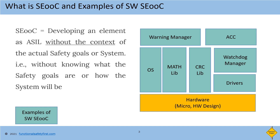Another example of software SEooCs is the operating system. All the ASIL-certified operating systems available in the market today are developed as SEooCs, such as QNX OS, Integrity, SafeRTOS, etc. Other examples include middleware components or libraries such as a math CRC library, Autosar watchdog manager, or even application software components for a specific functionality, such as a warning manager that manages all the warnings of the system, or an adaptive cruise control function in an ADAS system. The key takeaway is that any software component, no matter where it is placed in the software architecture — be it a driver, middleware, library, or application component — can be developed as a SEooC.